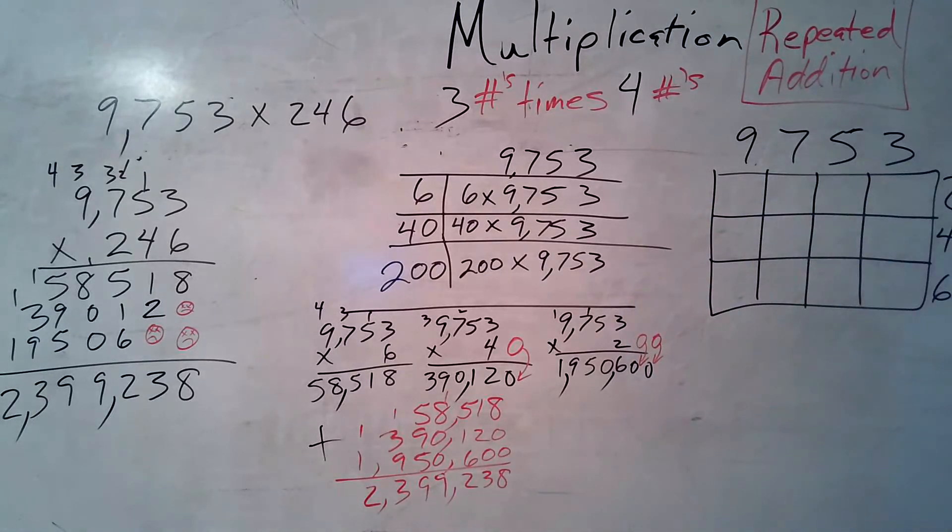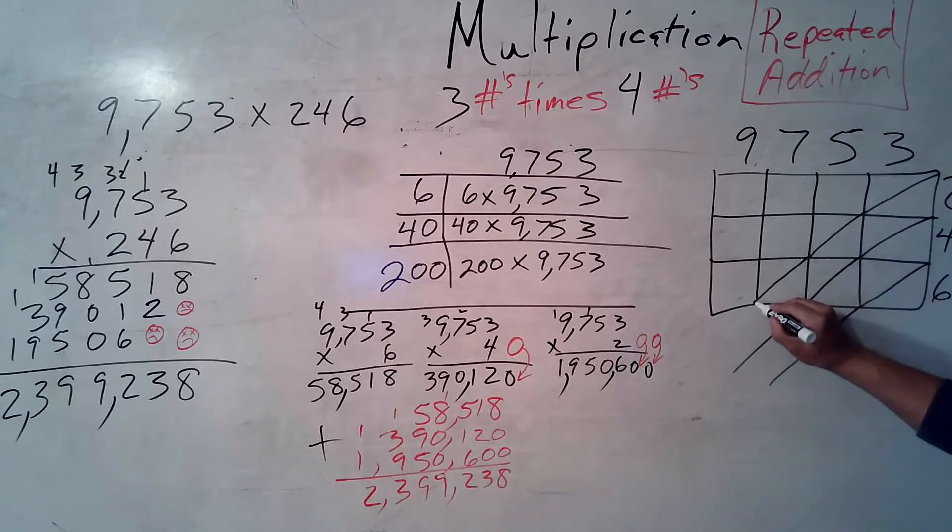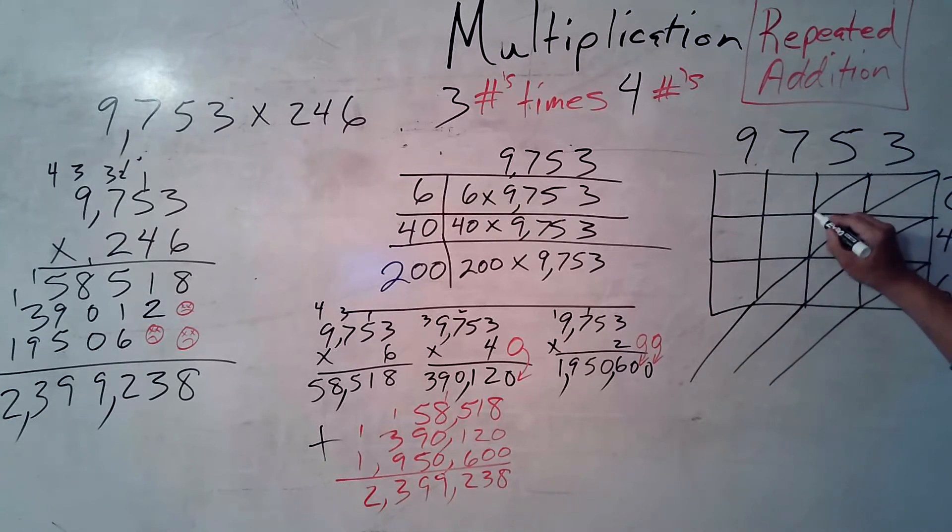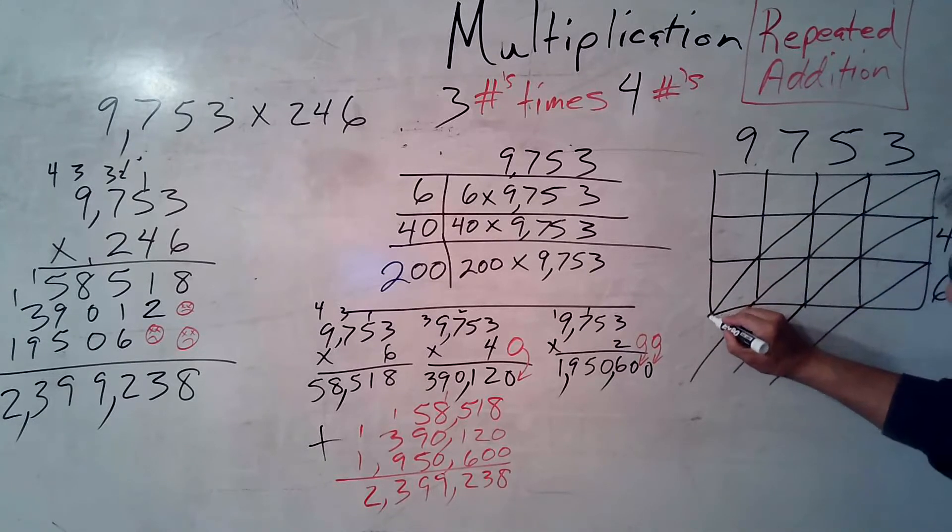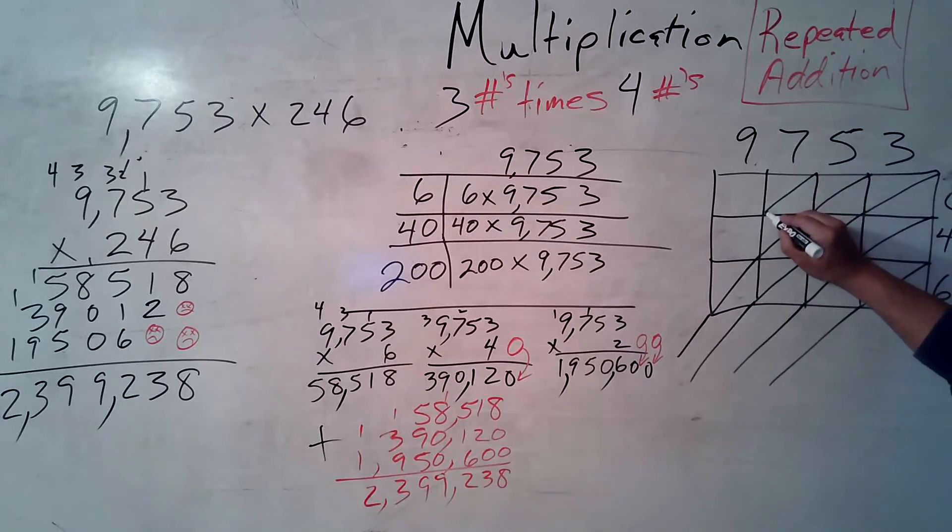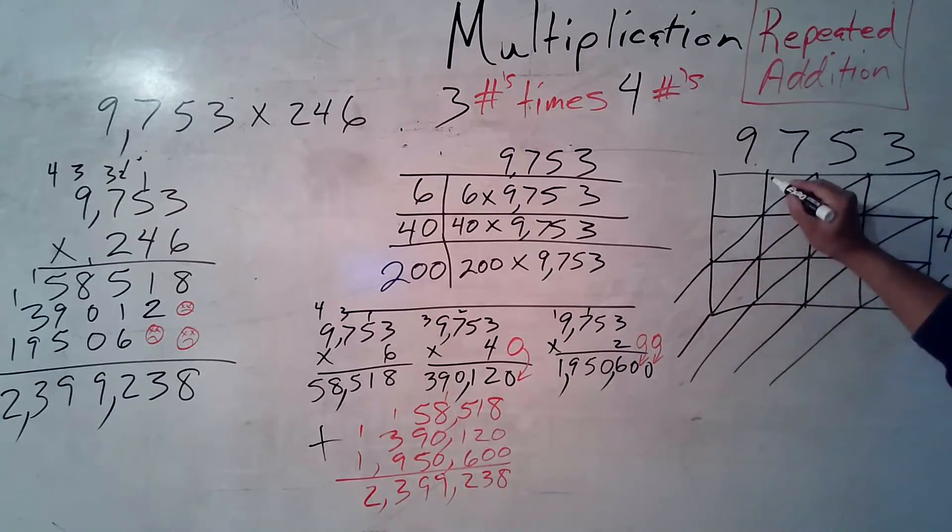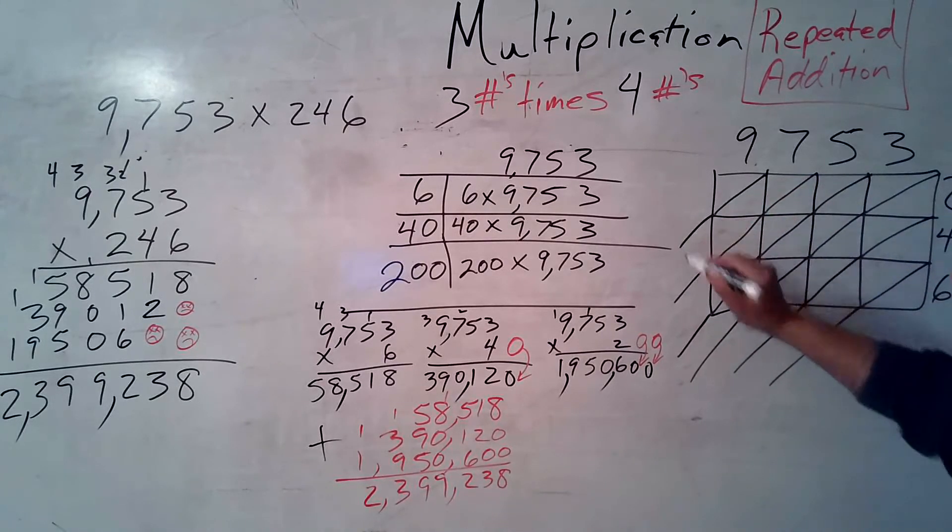Oh, hey. Check it out. It's my favorite. It's 9,753, 246. Corner, corner, down. I started in this bottom box right here. Corner, corner, corner, down. Corner, corner, corner, corner, down. Corner, corner, corner, corner, down. Corner, corner, corner, down. Corner, corner, down.